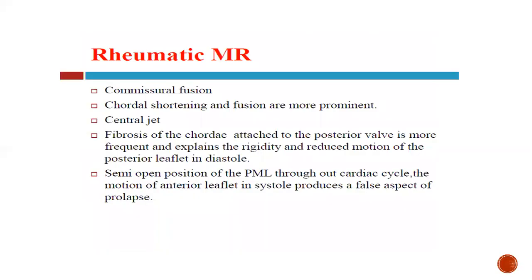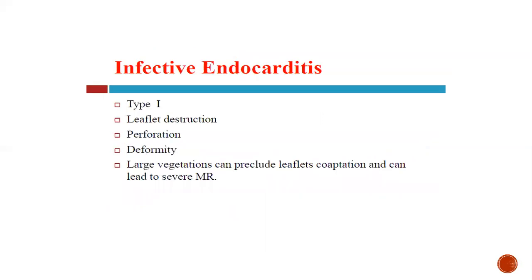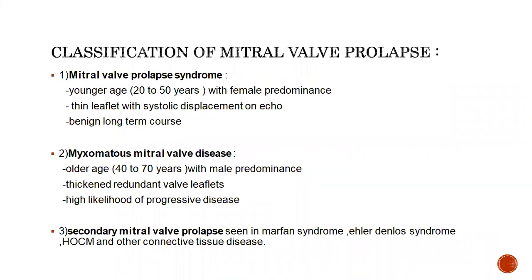In rheumatic MR, commissural fusion is generally seen. There is chordal shortening and fusion, which are more prominent, and MR is generally central. The process involving chordae attached to the posterior leaflet is more frequent, and reduced motion of the posterior leaflet in diastole is commonly seen. A semi-open posterior mitral leaflet throughout the cardiac cycle is seen, and motion of the anterior leaflet may produce a false sense of prolapse. In infective endocarditis, there is generally leaflet destruction, perforation, or deformity; a large vegetation may be present which may cause leaflet malcoaptation and lead to severe MR.